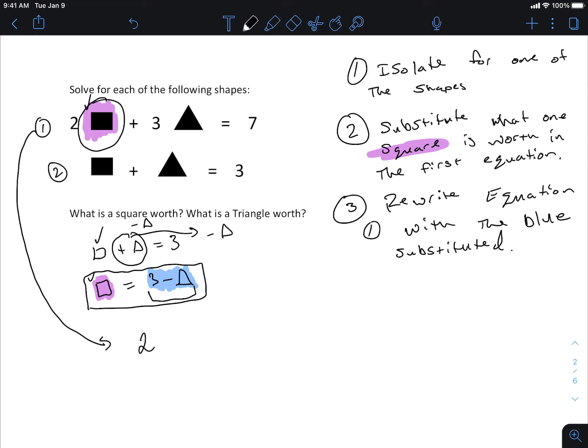Step three will be rewrite with the blue piece substituted. So I'm just going to rewrite the first equation. But instead of writing the purple piece, I'm going to write the blue piece instead this time. So two, and I'm going to open it back because it's multiplying, two times three minus a triangle. The purple piece turned into the blue piece. That was a square before. It was a square and it turned into the blue piece, because we just found it right here.